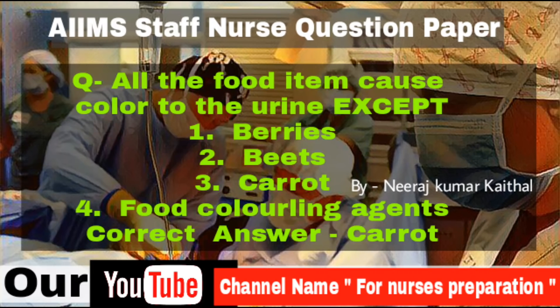Question: All the food items cause color to the urine EXCEPT — Berries, Beets, Carrot, Food coloring agents. Answer is Carrot.